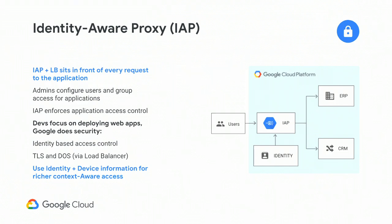Taking this one step further: what about securing applications? Google has made something available to customers called identity-aware proxy. This is a load balancer and proxy that sits in front of applications. When a user request comes in, the IAP does a check for who that user is and what they're entitled to do on the application — those things have to match. It does not only identity-based controls but also context controls: is this user accessing the service from an approved IP address, from an approved partner service? A lot of these checks can be done at this proxy layer to ensure only legitimate requests can make it into the back-end application.